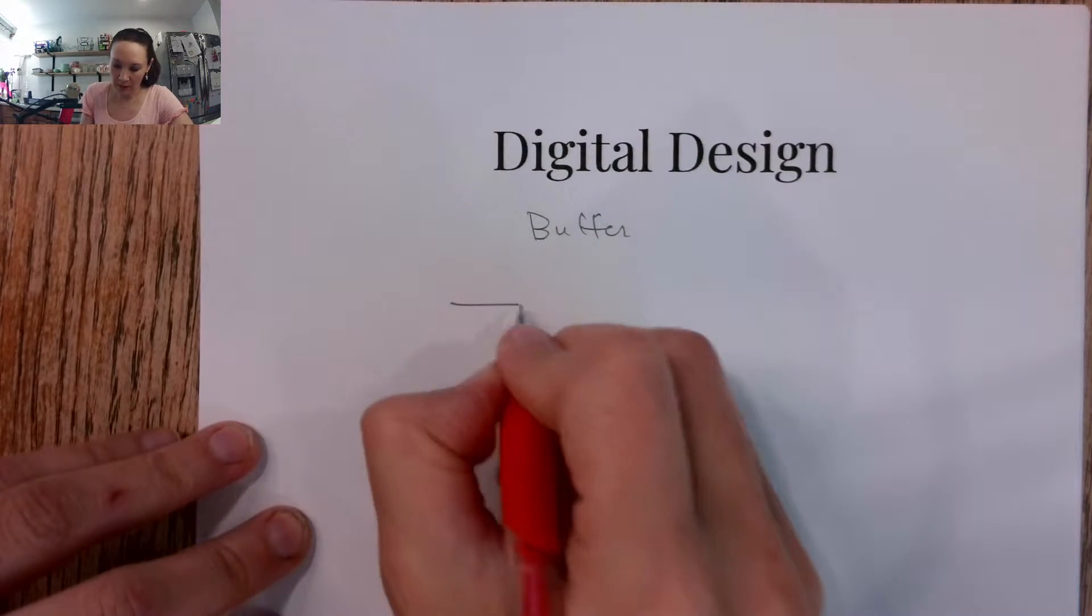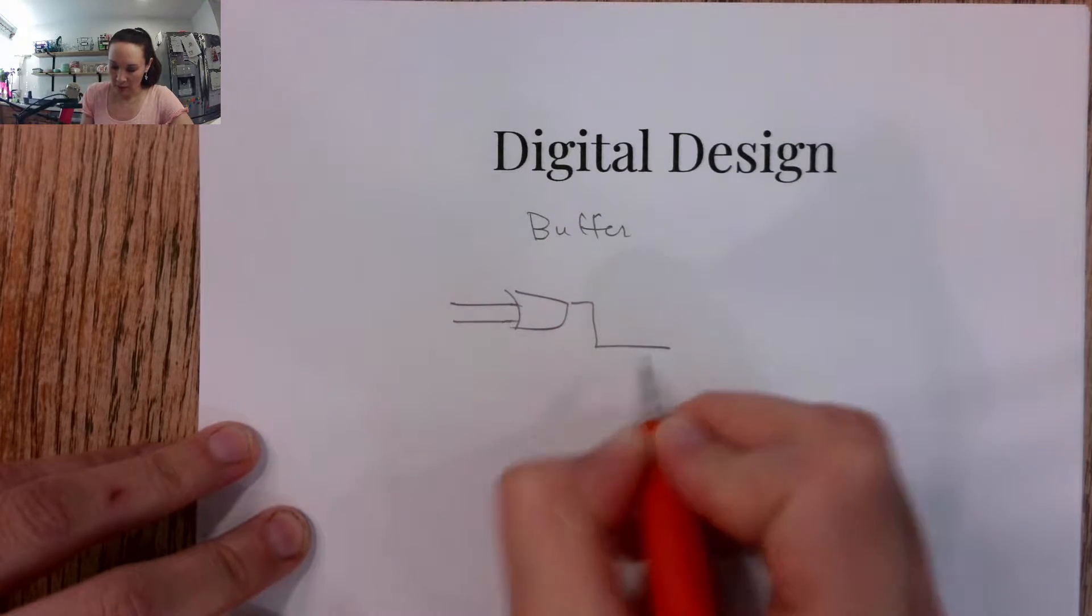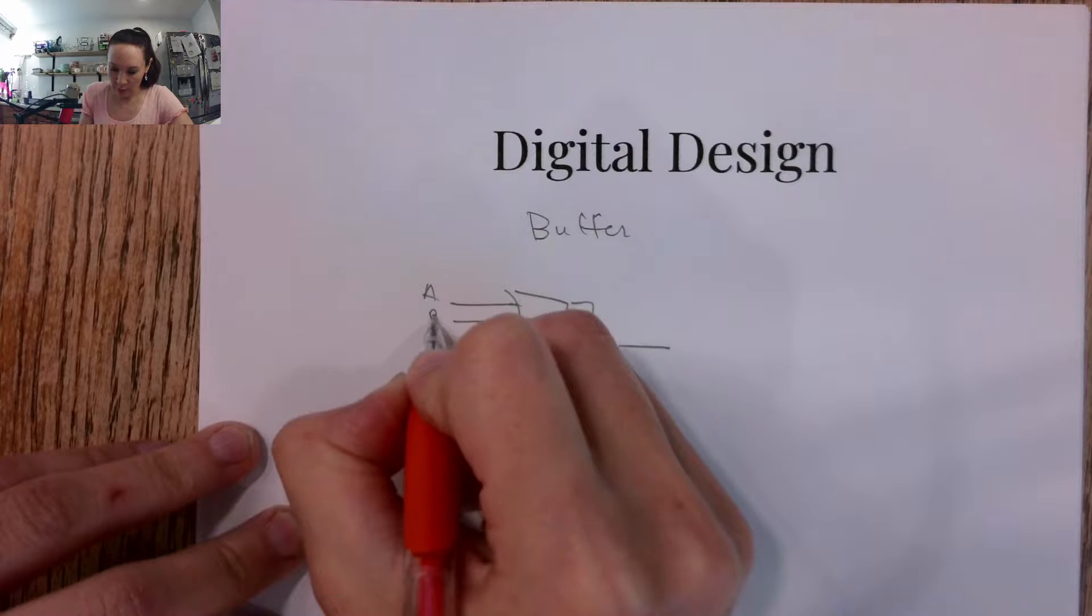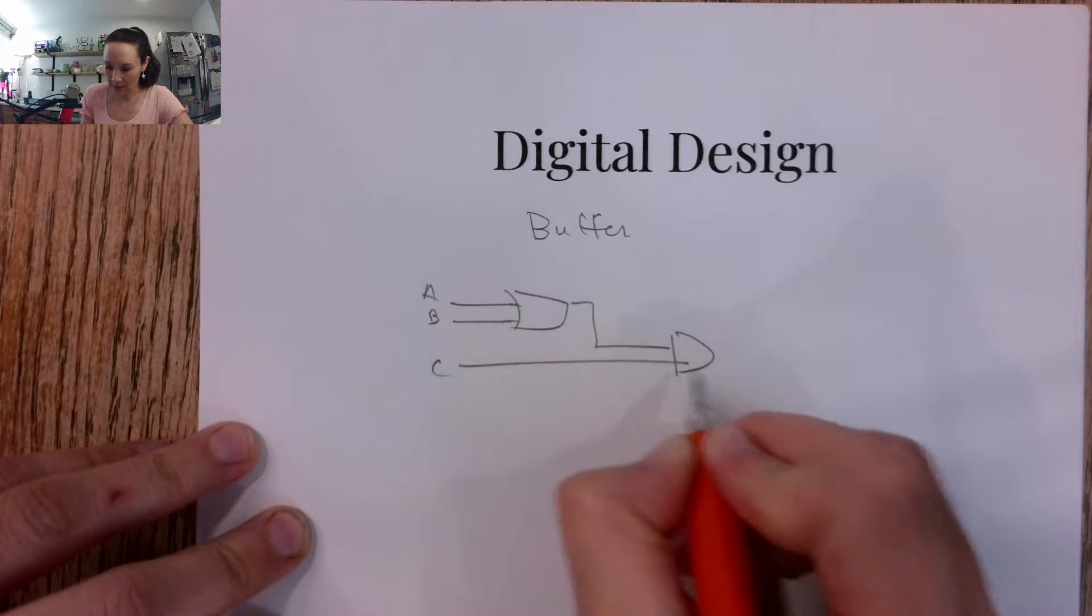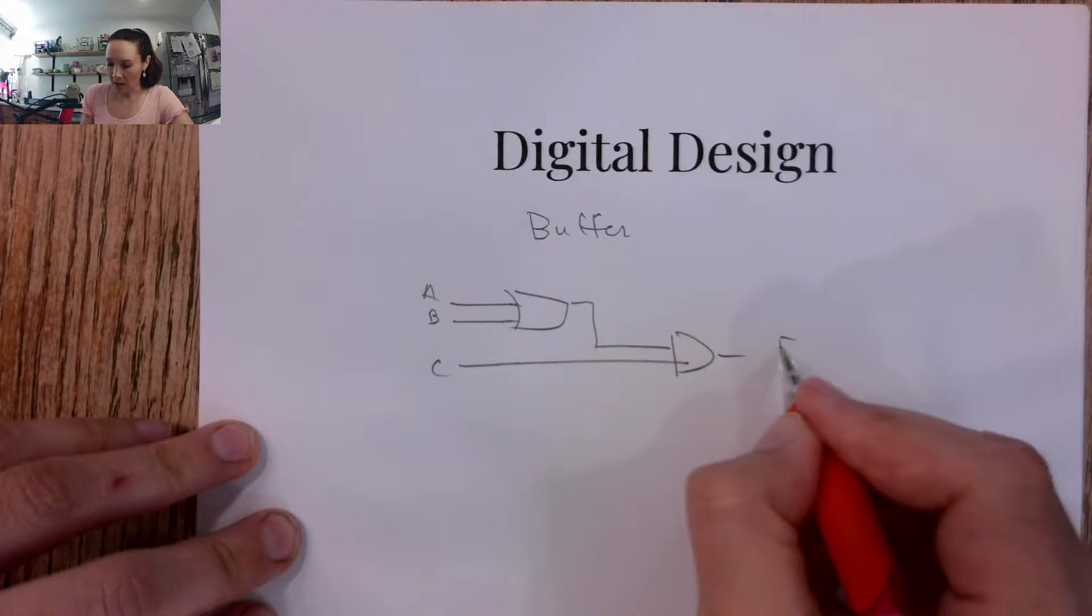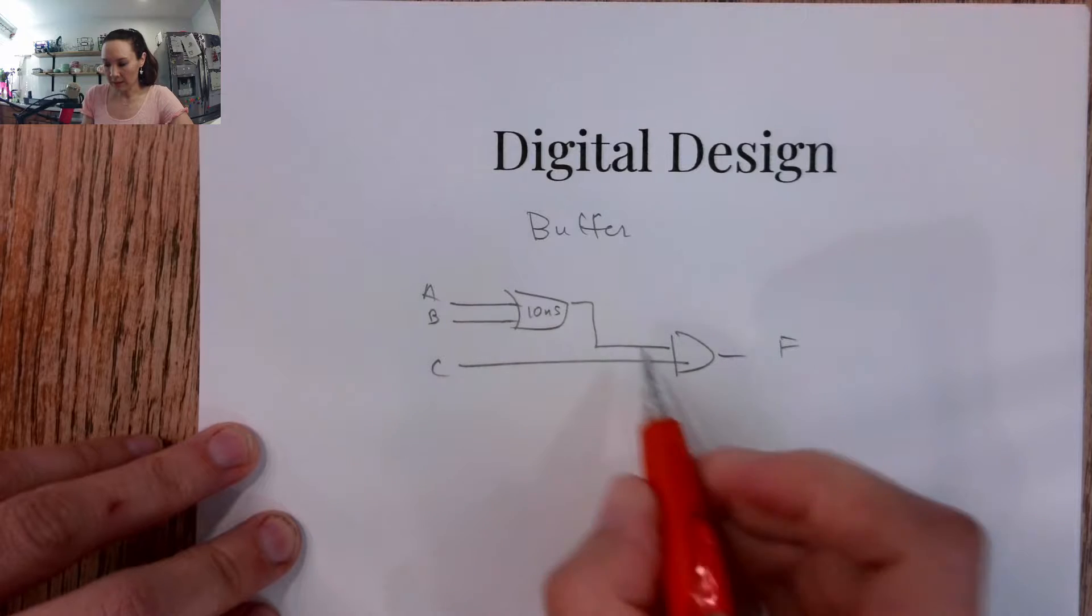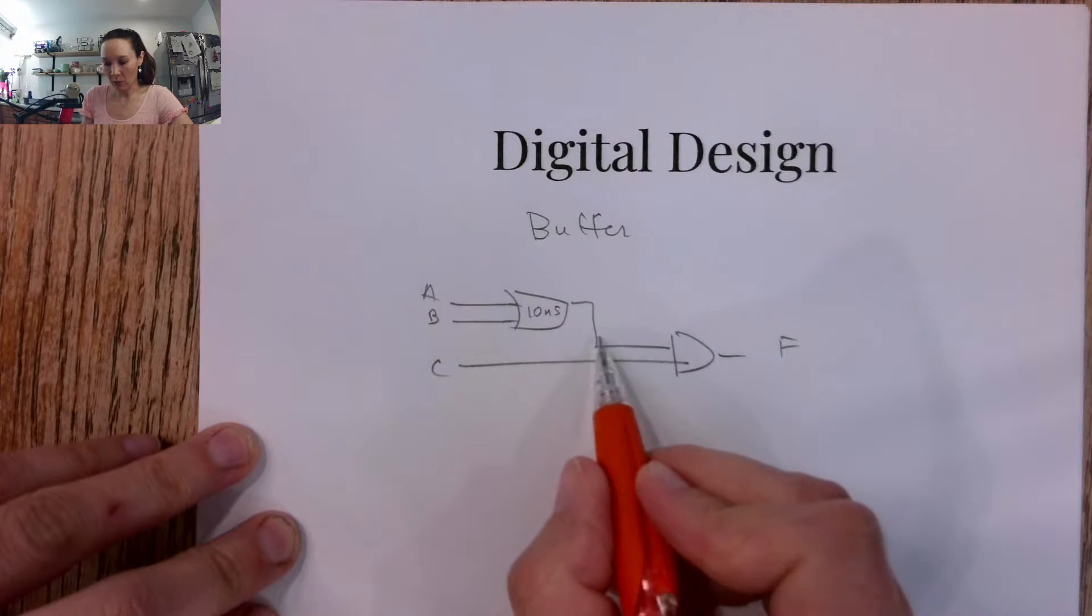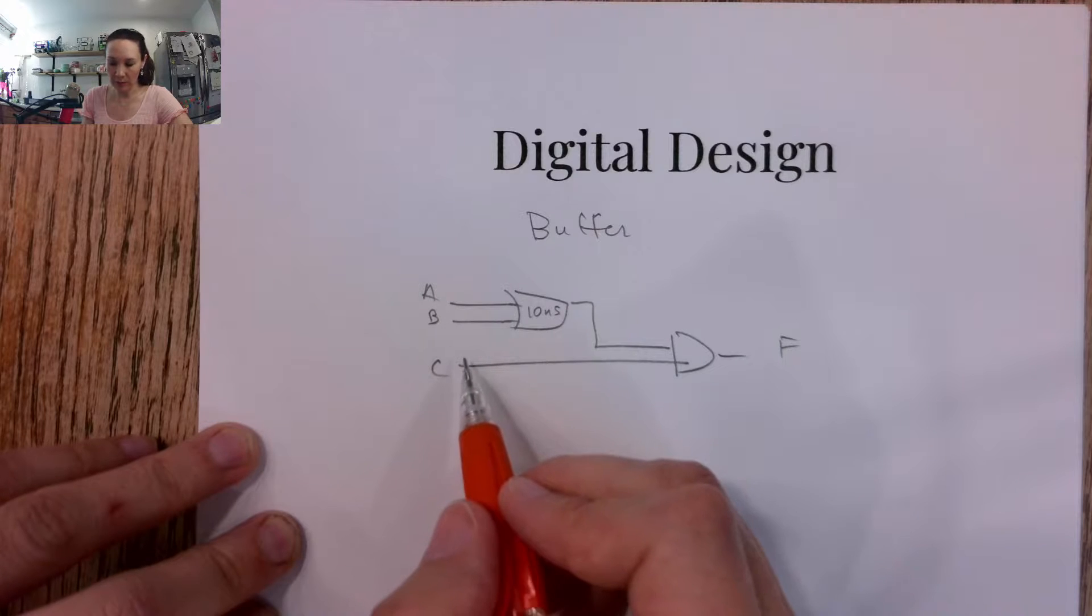So in the last video we looked at this simple two-level combinational circuit where we had A and B ORed together and that result was then ANDed with C. Then we saw how because of the gate delay of the OR, this output from the OR is not ready until 10 nanoseconds after we have a valid input for A and B.